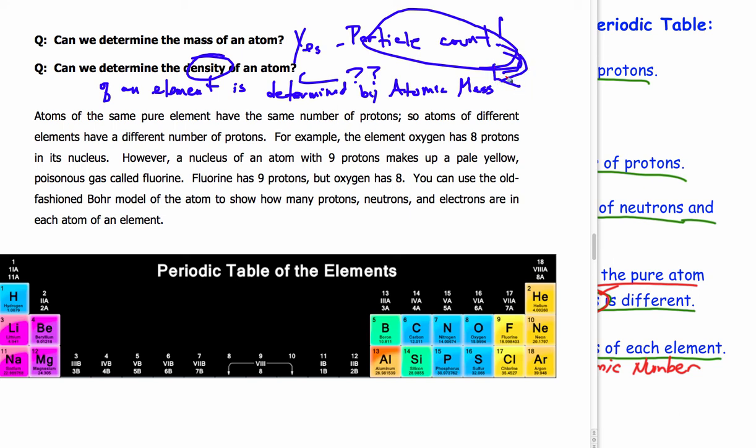Okay. So let's get these underlined. Atoms of the same pure element have the same number of protons. And atoms of different elements have a different number of protons. Okay.